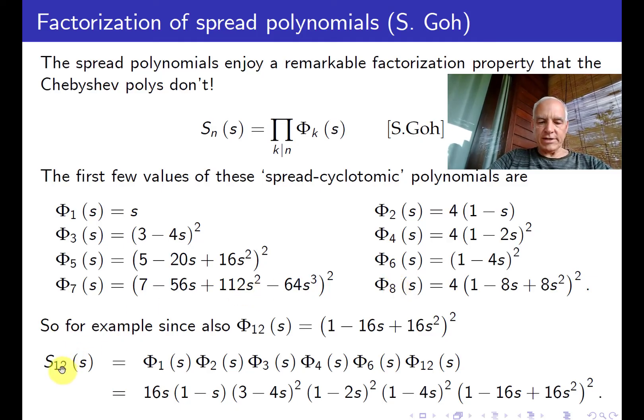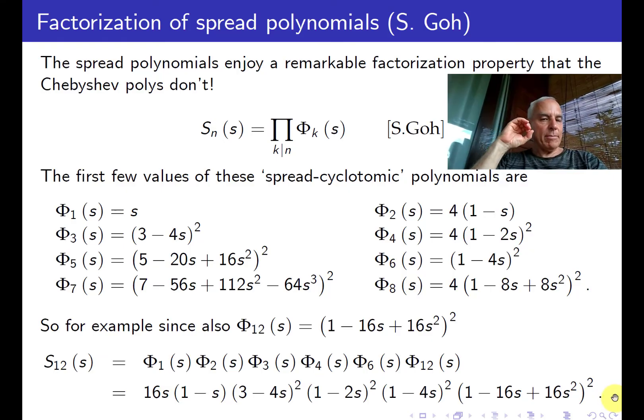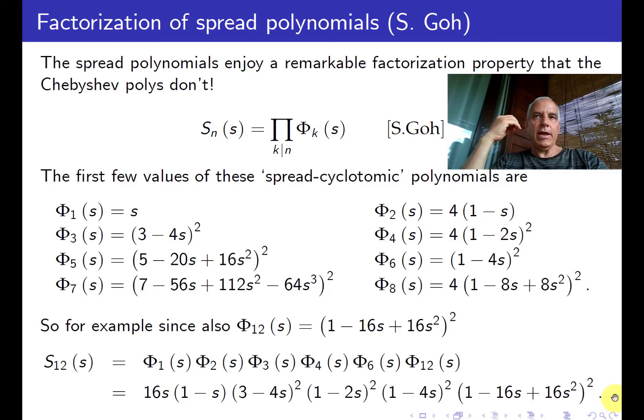For example, S₁₂ factors as a product of Φ₁, Φ₂, Φ₃, Φ₄, Φ₆, and Φ₁₂. Φ₁₂ happens to be this thing here, and then you get this expansion. I think I've already shown you at some earlier point. So this is a much stronger factorization than the Chebyshev polynomials enjoy.